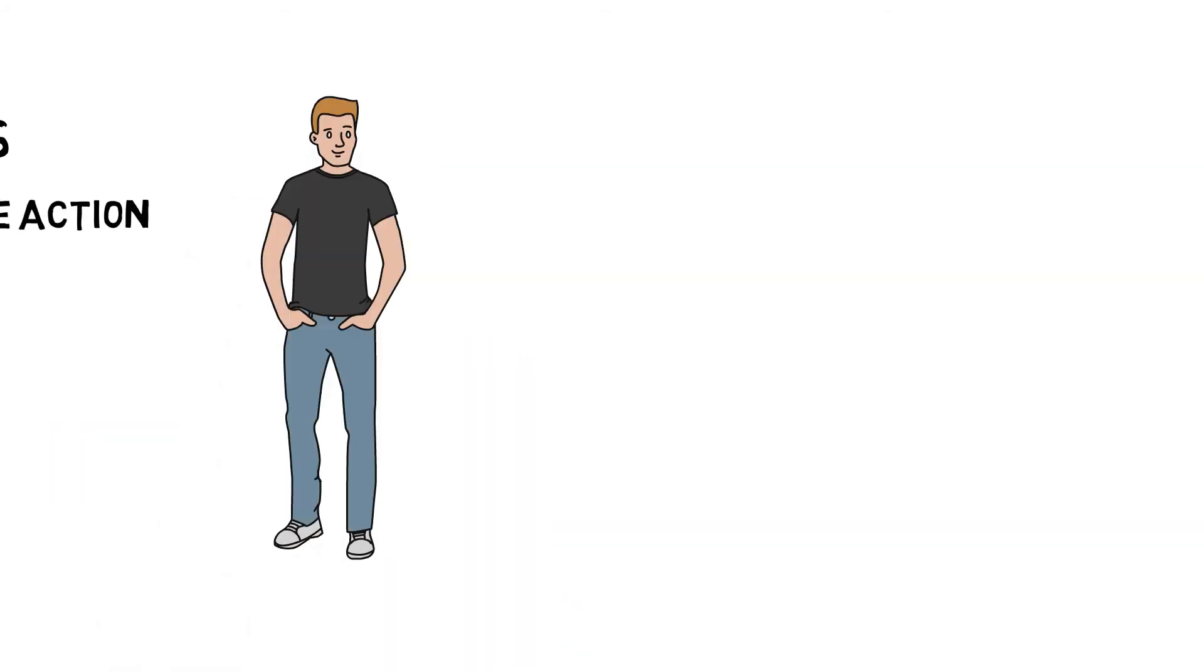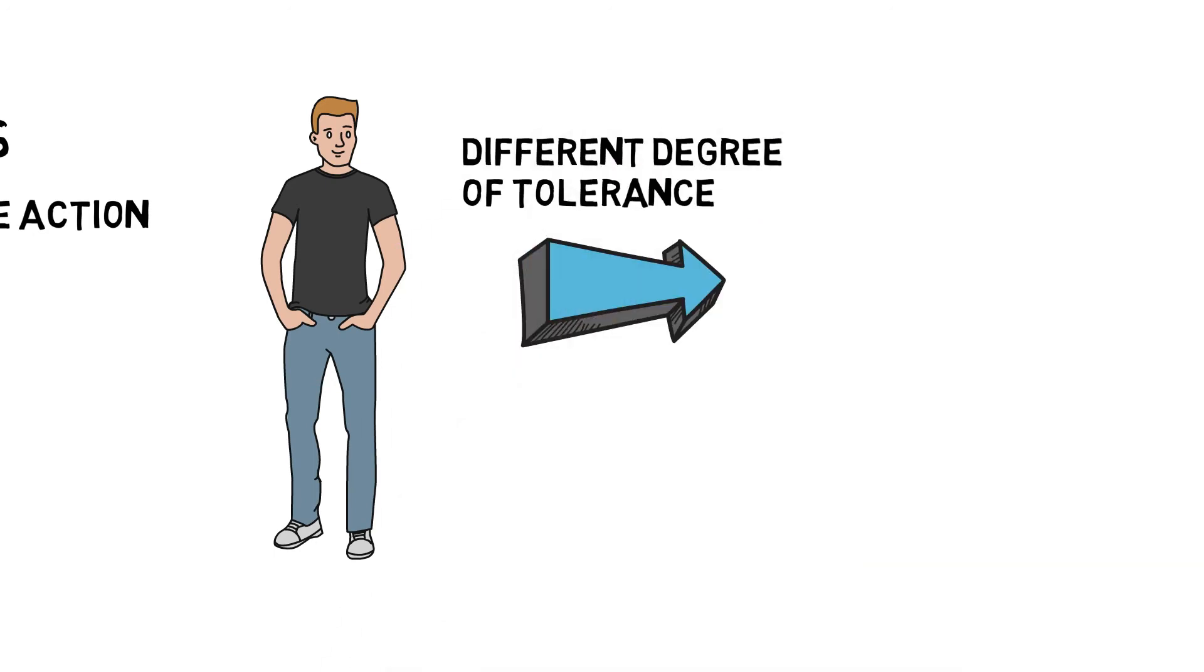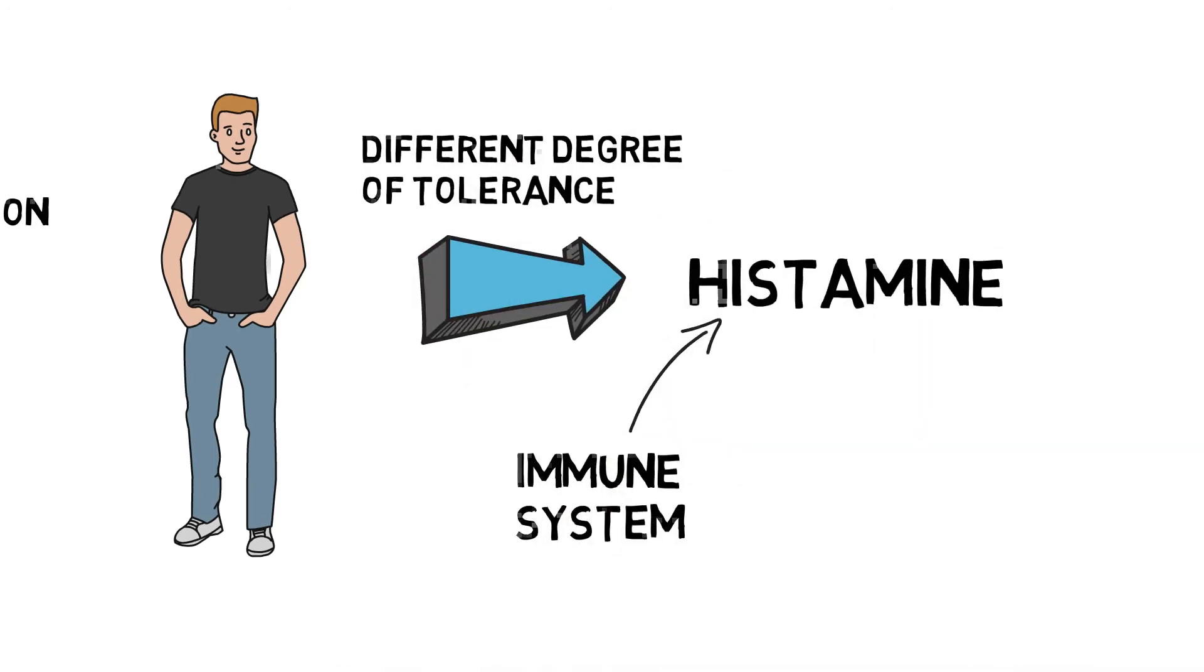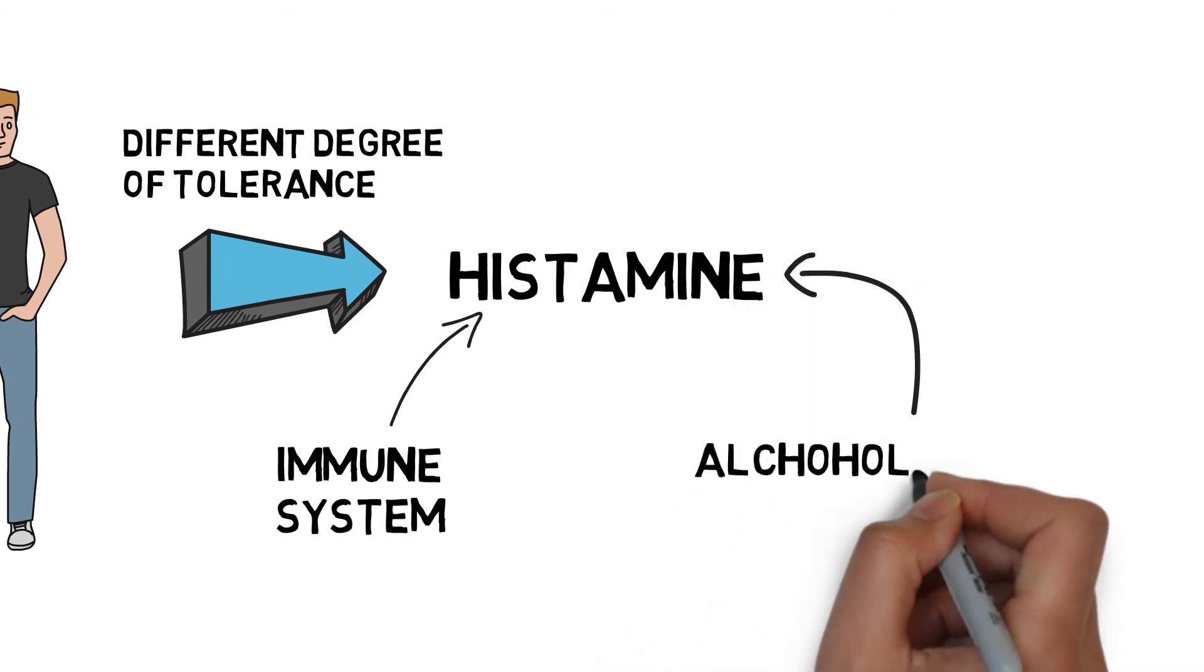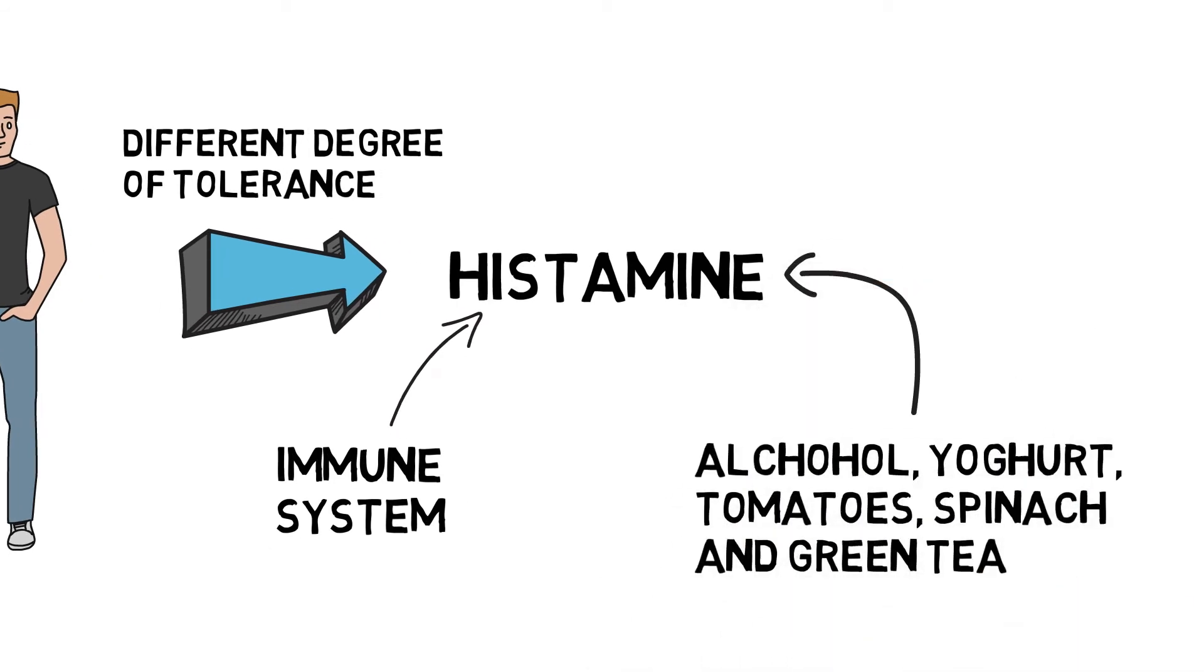Different people have different degrees of tolerance to histamine. Apart from being released by the immune system, histamine can also come from some foods like alcohol, yogurt, tomatoes, spinach, and green tea. Consumption of those foods may also cause allergic reactions. Antihistamines can help reduce the symptoms caused by those chemicals.